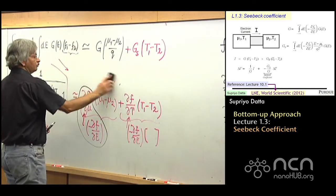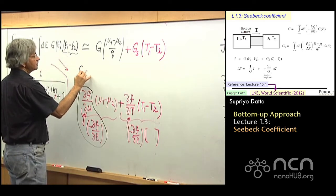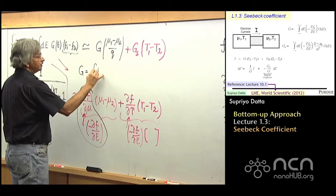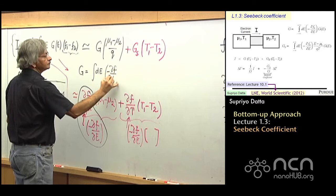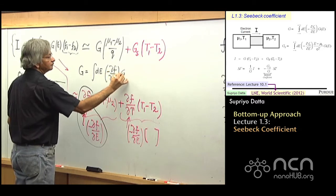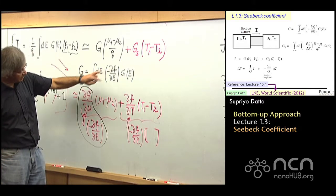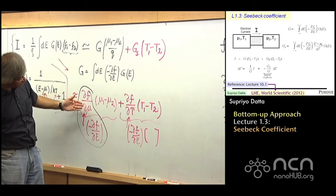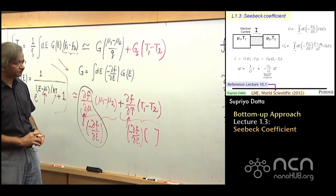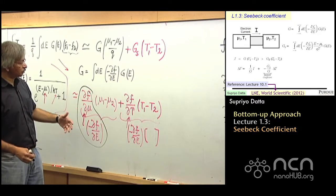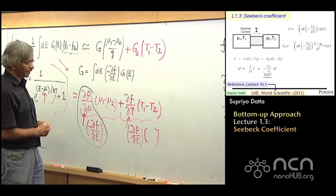From week 1, the expression for G was G = ∫dE (−∂F/∂E) G(E). We had the −∂F/∂E because we replaced the partial with respect to μ by the partial with respect to E. Now the question is: when we want to find GS, what should we get?